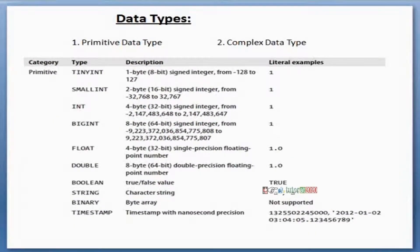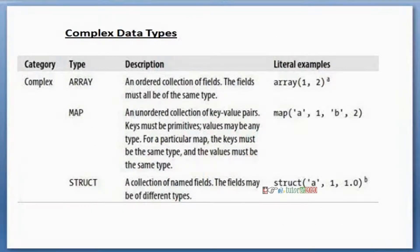Now looking at Hive data types: there are two major categories — primitive data types and complex data types. Primitive types include integer, float, double, long, etc. One difference from SQL is that Hive uses 'string' instead of 'char' or 'varchar'. Complex data types include array (ordered collection of fields), map (unordered collection of key-value pairs), and struct (collection of named fields).